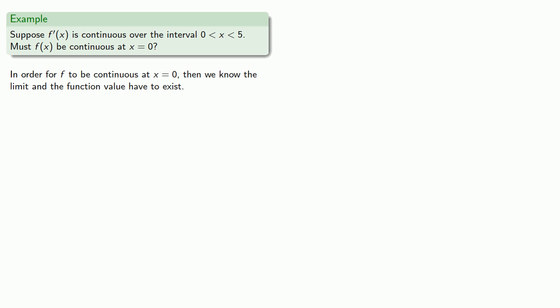Now, in order for f to be continuous at x equals 0, then we know the limit and the function value have to exist. So, if f of 0 isn't defined, then f won't be continuous.